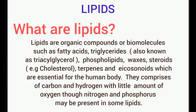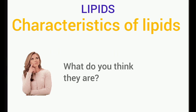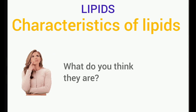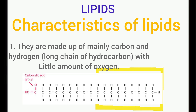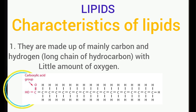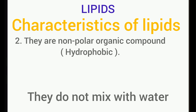Now we are going to look at some of the key characteristics of lipids. They are made up of a long chain of hydrocarbon with a carboxylic end, comprising of oxygen. Hydrocarbon means they comprise mainly of carbon and hydrogen, though with little amount of oxygen in the carboxylic end. Other elements such as nitrogen and phosphorus may also be present.